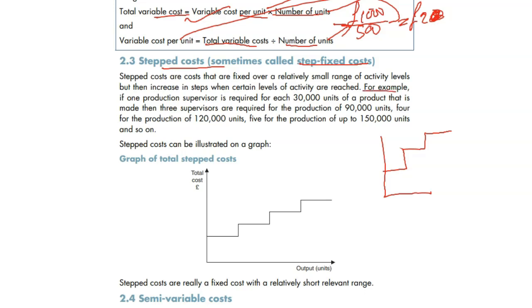For example, if one production supervisor is required for 30,000 units of production, then three supervisors are required for the production of 90,000 or 120,000. Let's assume for 30,000 units we need one supervisor. Up to 30,000 units you can produce, and we're paying them a salary of 2,000 pounds.